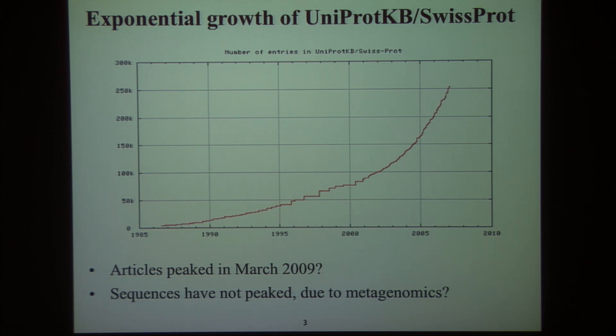It may be that the published literature actually grew exponentially until 2009, and since then has stayed roughly stable. If that's true, that's quite understandable in terms of funding levels and human effort levels. But the availability of sequence data has not at all peaked, especially because of metagenomics — going out and sequencing whatever you can find in environmental samples, whether from the human digestive system or from the ocean. So we certainly need automated ways of dealing with sequence data.